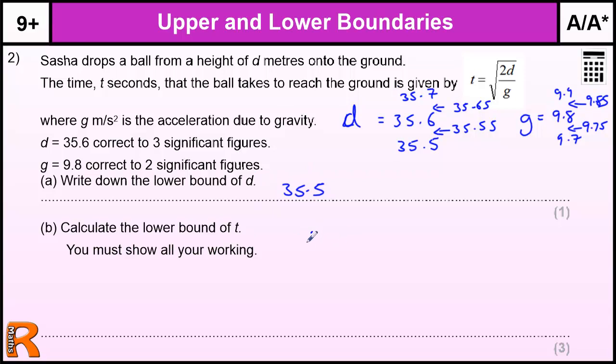Calculate the lower bound of T, so T equals the square root of 2D over G. Essentially, this is just a division one. We're trying to get the lower boundary of T, so the T min. We need to use the smallest value on top and the biggest value on the bottom. The square root makes no difference - it just makes everything smaller, unless it's less than one, then it makes it bigger. And the two is not significant, so we just leave those in and we do two lots of D min divided by the G max value.